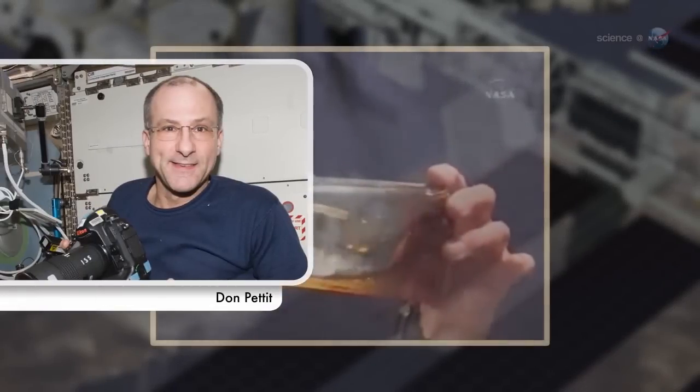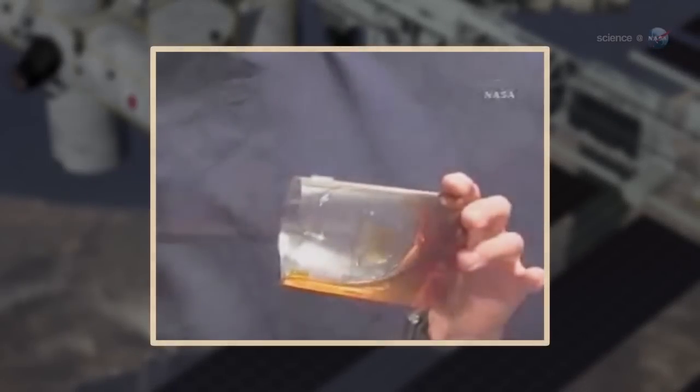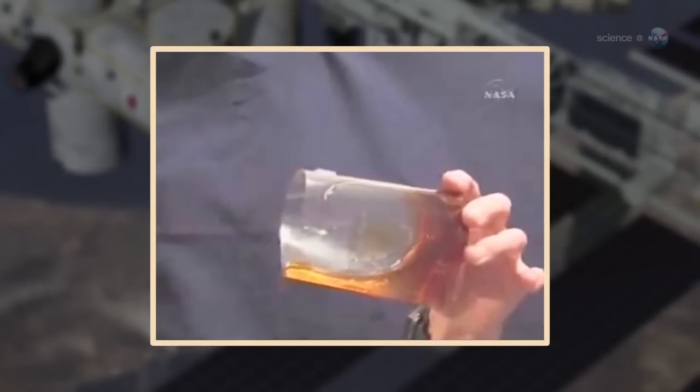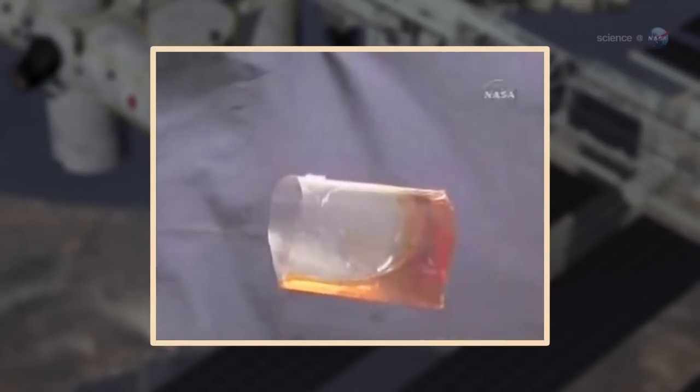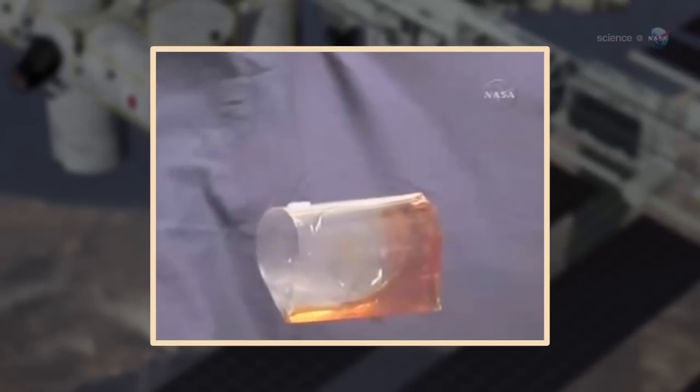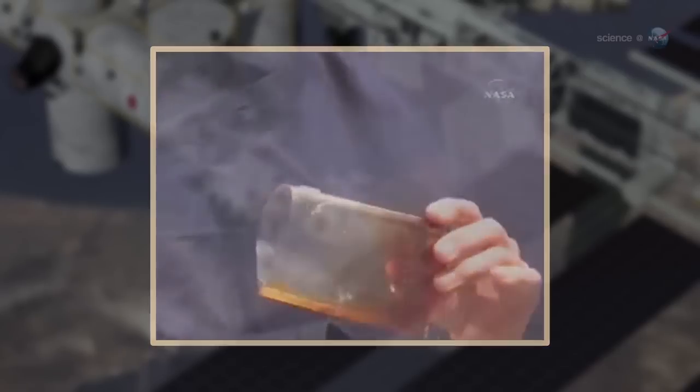Astronaut Don Pettit, who worked with the capillary flow experiment during his time on board the space station, helped invent the cup. And he shares the patent with Weislogel and two mathematicians, Paul Conkiss and Robert Finn, who performed the first theoretical analysis of the phenomenon.